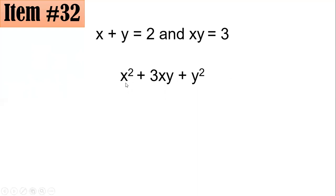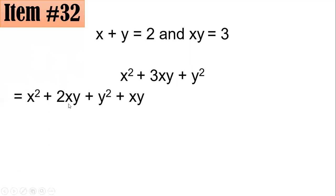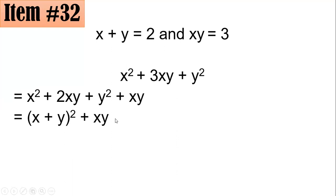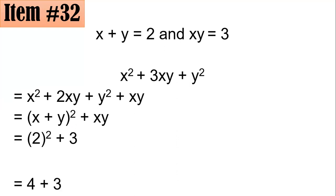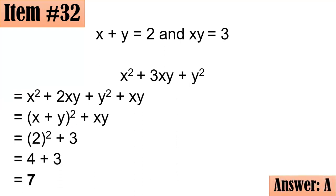To make a perfect square trinomial, the middle term should be 2xy. So 3xy is written as 2xy plus xy, giving x squared plus 2xy plus y squared plus xy. This trinomial can be expressed as (x + y) squared plus xy. Substituting x plus y equals 2 and xy equals 3: 2 squared plus 3 equals 4 plus 3 equals 7. The answer is letter A.